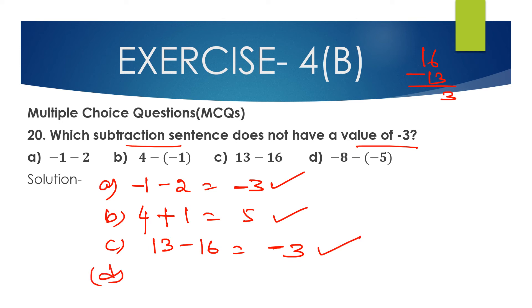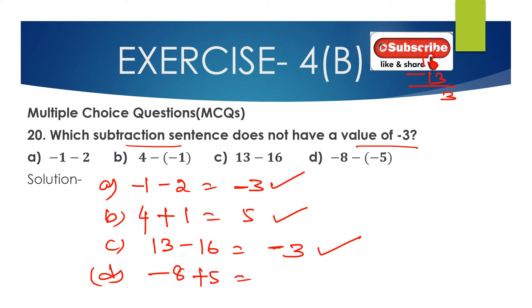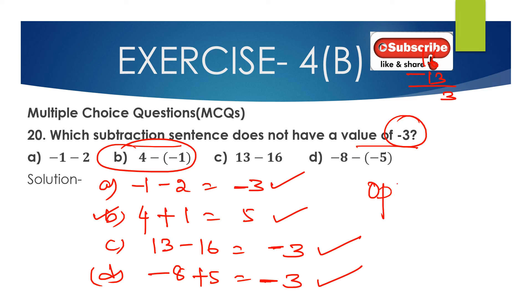Option D: minus 8 minus of minus 5 equals minus 8 plus 5. Subtract 5 from 8 to get 3, and place the sign of 8 (which is negative) — so the answer is minus 3. Therefore, option B with value 5 is the only option that does not equal minus 3. Option B is the correct answer.